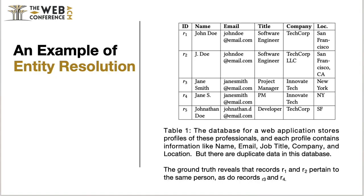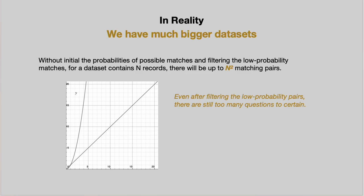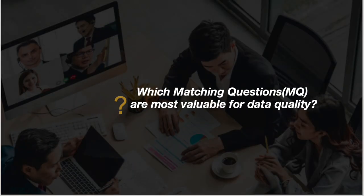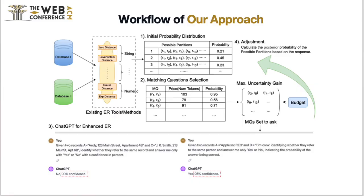However, in real-world implementations, we have much bigger data sizes. For a dataset containing n records, there will be up to n² possible matching pairs. So, which matching questions are most valuable for data quality? To solve such a problem, we present the Booster, which involves four key steps.